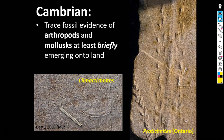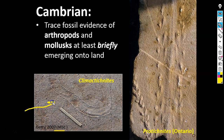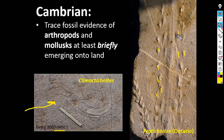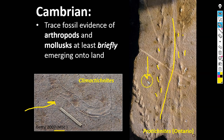By the time we get into the Cambrian, we have evidence that at least periodically some organisms are moving up onto land. There's a trackway from a Canadian master's thesis where the sediments were interpreted as being terrestrial or at least marginal marine. You can see these little paired footprints — this is an arthropod of some kind, with its tail dragging along. This might have been a trilobite or something like that, moving out.